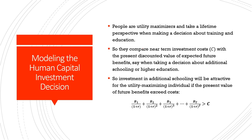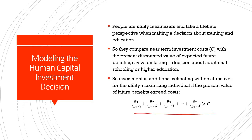To model the human capital investment decision, we follow standard economic assumptions where people are utility maximizers who take a lifetime perspective when making decisions about training and education. We compare investment costs with the present discounted value of expected future benefits. When taking a decision about additional schooling or higher education—or returning to education from the labour market—we compare near-term investment costs with present discounted value of expected future benefits. Investment in additional schooling will be attractive for a utility-maximizing individual if the present value of future benefits exceeds costs, i.e., if PV > C.